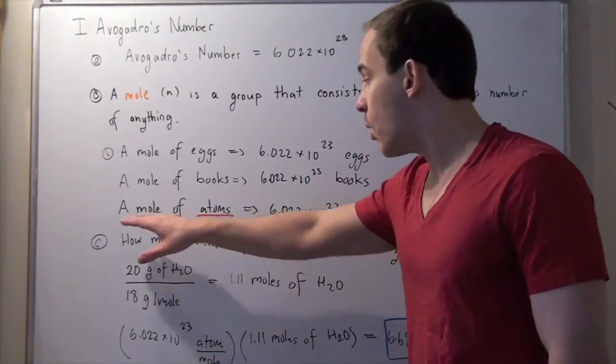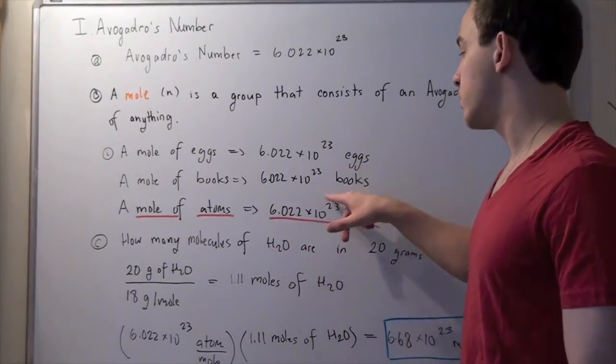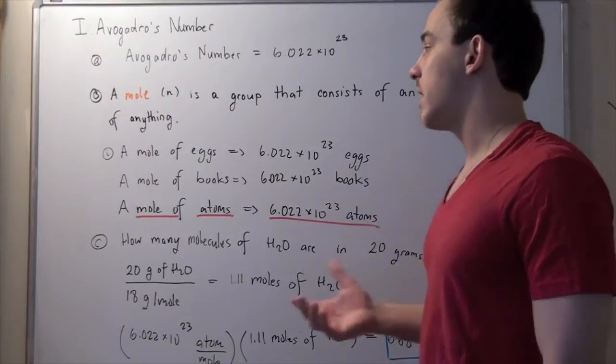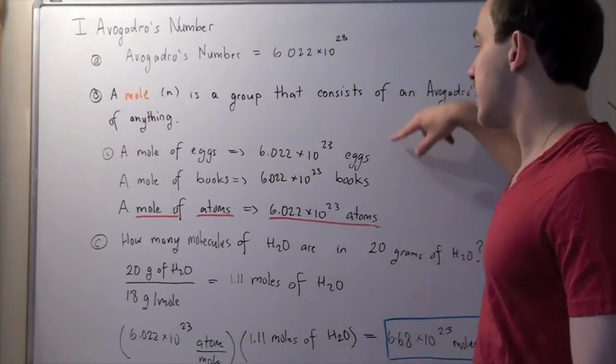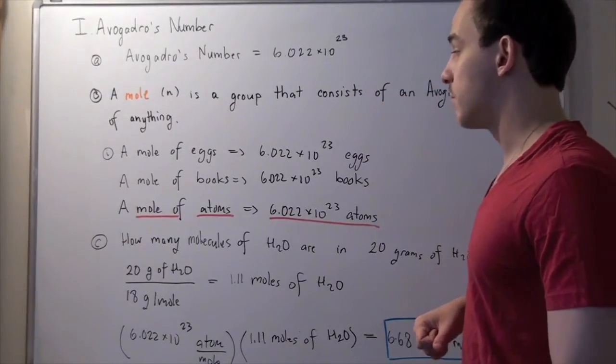For example, we can talk about a mole of atoms, which is 6.022 times 10 to the 23 atoms, but we can't really, or it doesn't make sense to talk about a mole of books or a mole of eggs, because I don't think we have this many eggs in the world. Maybe we do, but it's just a very large number.